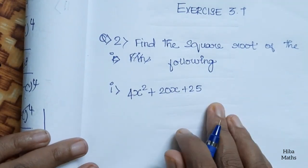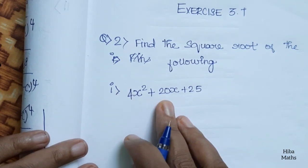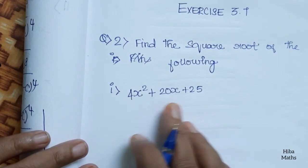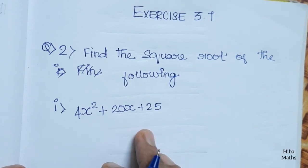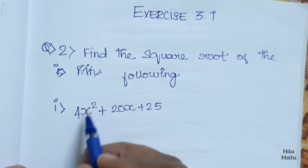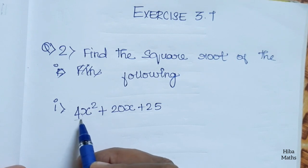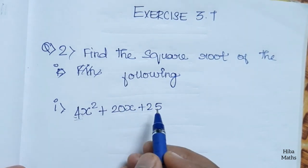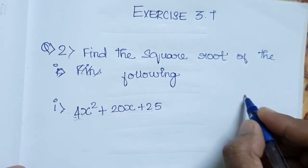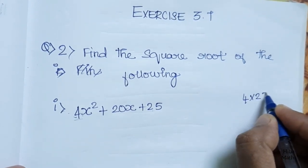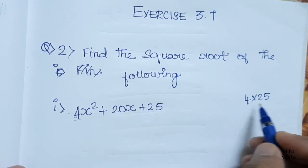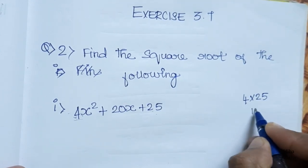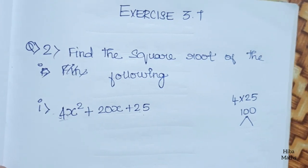First question: 4x² plus 20x plus 25. We will use factorization. The constant is 4, and 25 is done. Multiply 4 times 25, which equals 100. We then split the answer.